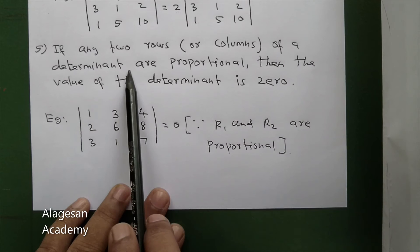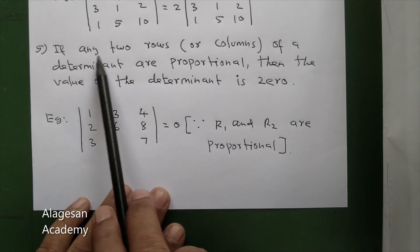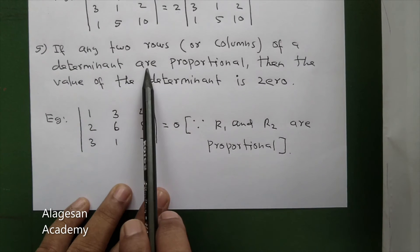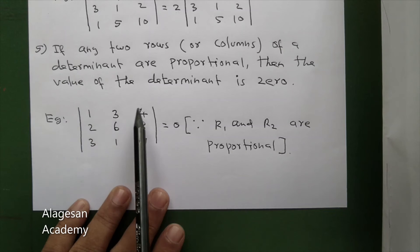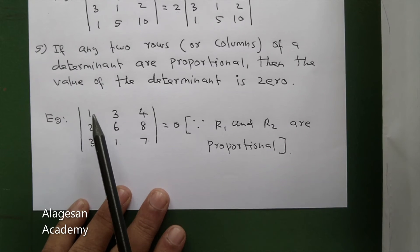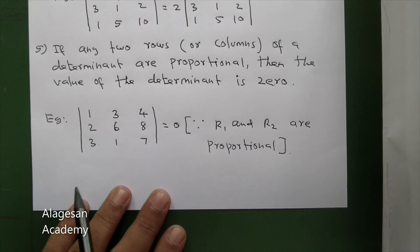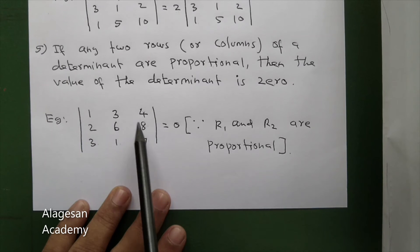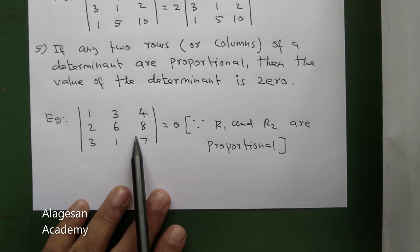Next property: if any two rows or columns of a determinant are proportional, then the value of the determinant is zero. For example, the determinant with rows 1, 3, 4; then 2, 6, 8; then 3, 1, 7 — the ratio of corresponding elements of rows one and two are 1:2, 3:6, and 4:8, all equal to one-half. So these two rows are proportional, and the determinant value is zero.